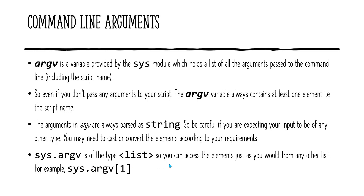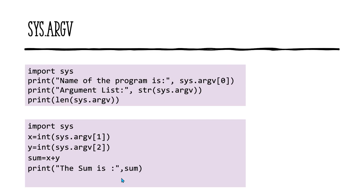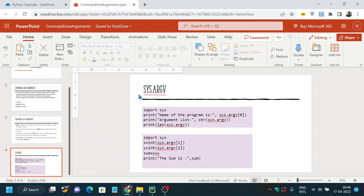Finally, sys.argv is of type list, so you can access the elements just as you would from any other list. The real argument will start from index one because the program name is at index zero.